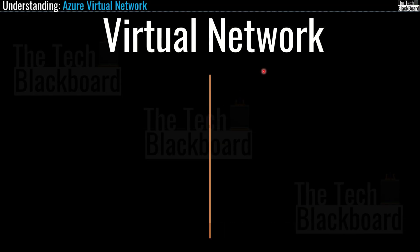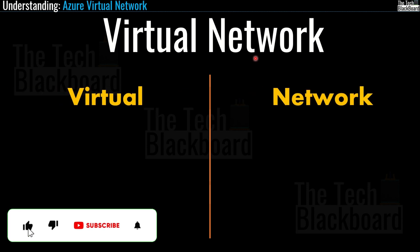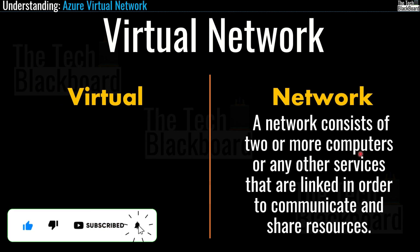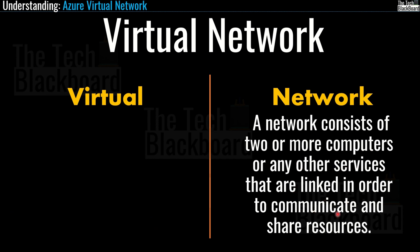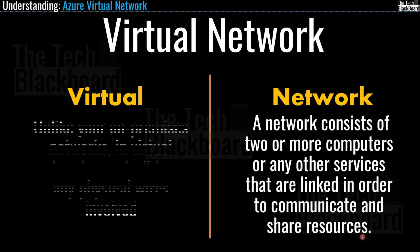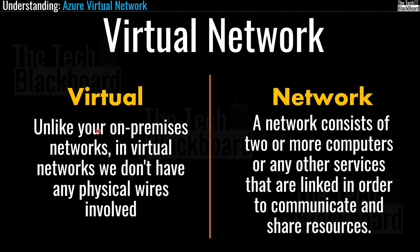Let's break down and understand virtual network in our own words. A network consists of two or more computers or services that are linked in order to communicate and share resources — it is nothing but the communication channel between two resources. It's called virtual because, unlike your on-premises network, virtual networks do not have any physical wires involved in connecting resources. Everything happens virtually.